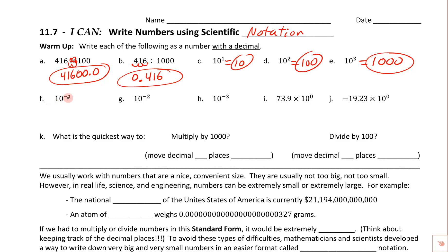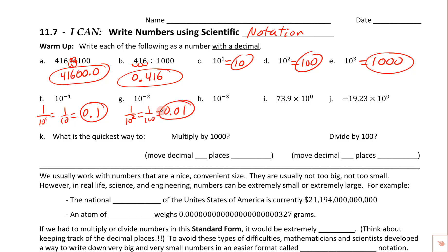If we have a negative exponent, remember the negative means reciprocal. So 10 to the negative 1 is 1 over 10, which as a decimal is 0.1. 10 to the negative 2 is 1 over 10 squared, which is 1 over 100 — so that's 0.01. And 10 to the negative 3 is 1 over 1000 — one one-thousandth — so the decimal is 0.001. Tenths, hundredths, thousandths.